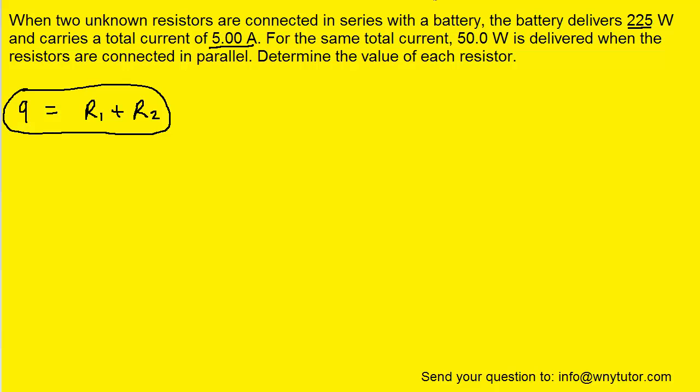To get the second equation, we can go to the second part of the question, which tells us that with the same total current, the power is 50 watts when these resistors are connected in parallel.